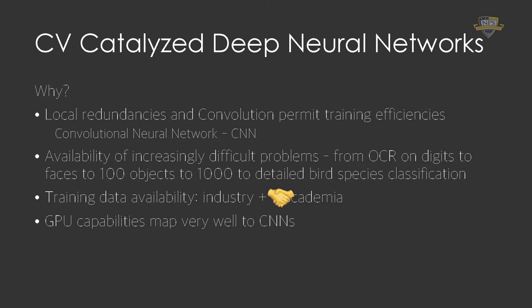GPU — graphics processing unit — capabilities map really well to deep neural networks. It's the same kind of data, the same kind of processing: single-precision floating point in a grid. That's exactly what you do for graphics, and exactly what you do in neural networks. So we finally had the computational power to do this, which is why deep neural networks came about and are able to accomplish what they can today.